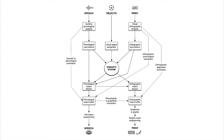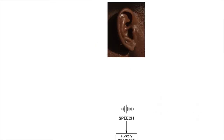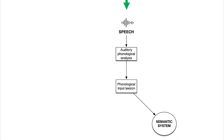We are going to start by looking at what it takes to comprehend spoken words — spoken language. So that will start up here and end in the semantic system. First of all is hearing, but that's not pictured in this model because this is a language model, though obviously you need to be able to hear. Once your brain identifies that these are speech sounds, it's passed to these processes. The first step, once speech is identified as speech and not music or noise, is auditory phonological analysis.